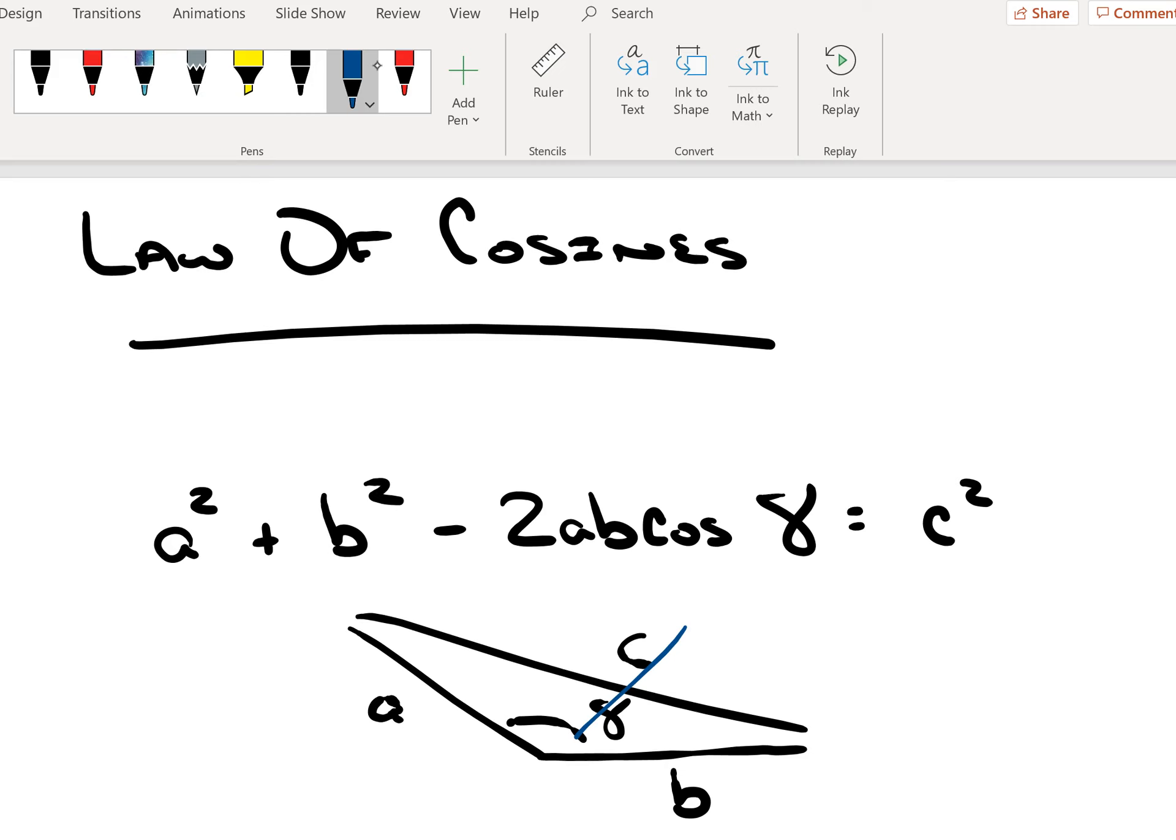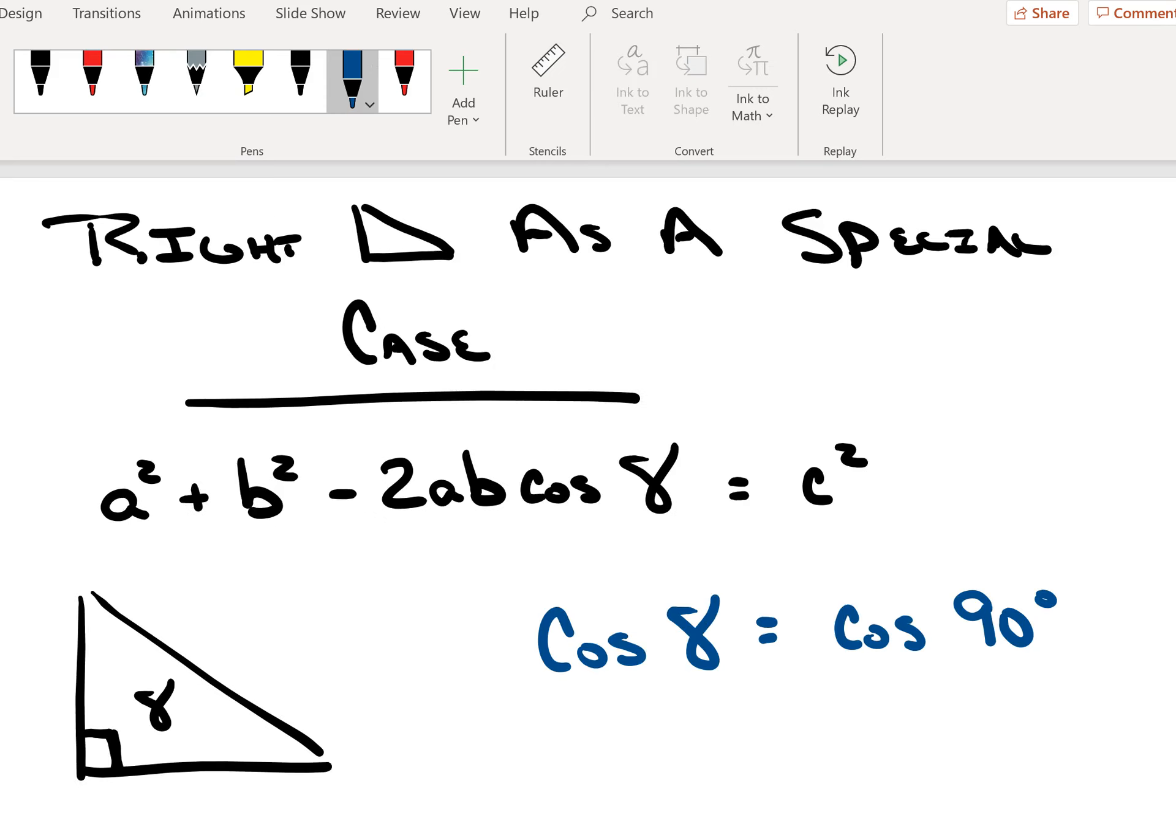We do make use of this law a good bit in higher level physics courses. Now when we take a right triangle as an example, what we're doing is specifying that angle gamma is exactly 90 degrees. We want to verify that the law of cosines collapses to the Pythagorean theorem as soon as we take this into account.